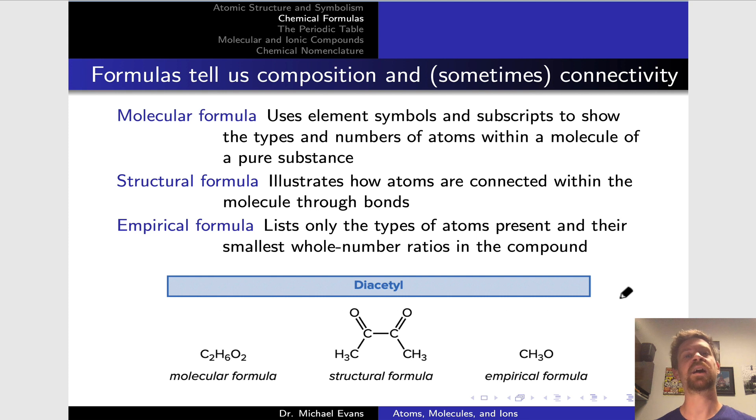Sometimes we also get connectivity information about a formula, particularly when a structural formula is used. These levels of structure, the composition and the connectivity, are ways chemists think about the fine level structure of a compound and how structure relates to properties.